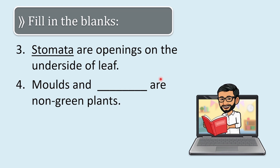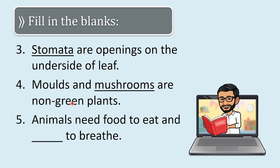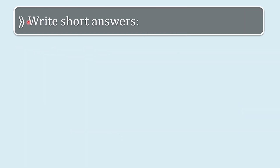Third blank: dash are openings on the underside of a leaf. The answer is stomata. Fourth: molds and dash are non-green plants — mushrooms. These are non-green plants belonging to the fungi group. Fifth: animals need food to eat and dash to breathe. The answer is oxygen — all animals need oxygen to breathe, just like they need food to eat.